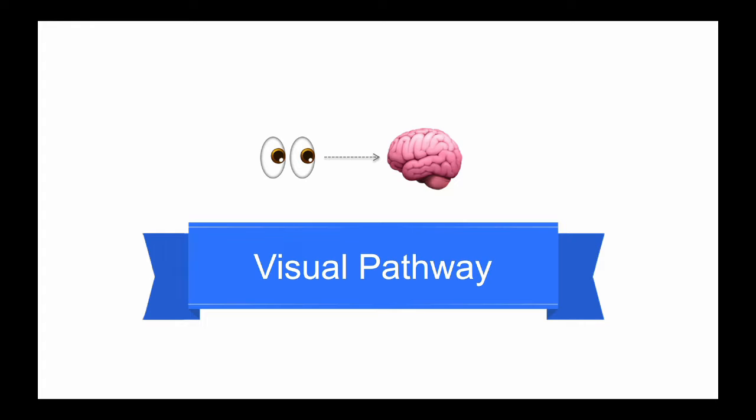The route from simple light detection in the eye to complex visual experience in the brain involves an orderly projection through several structures.